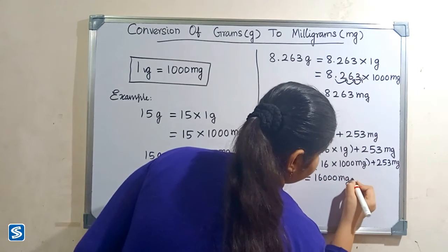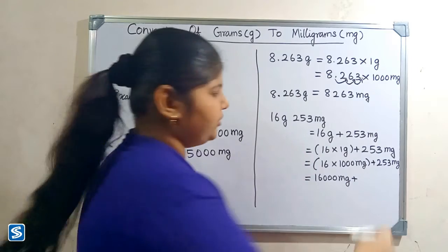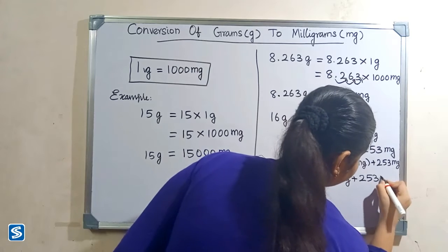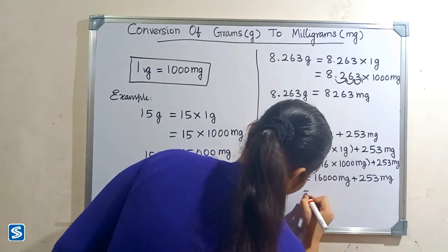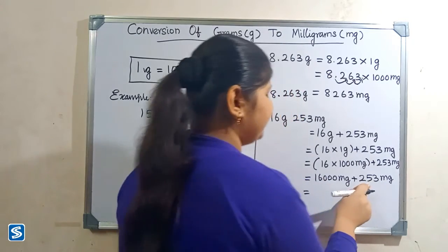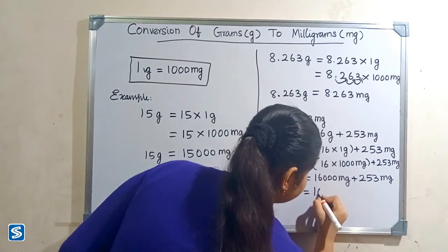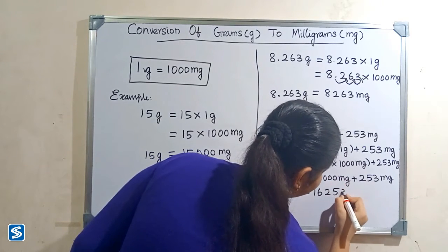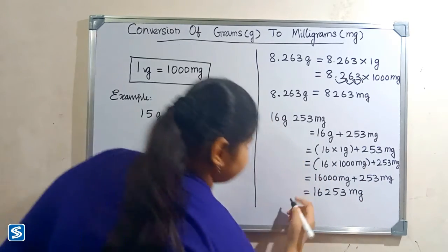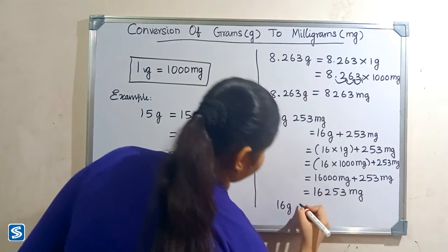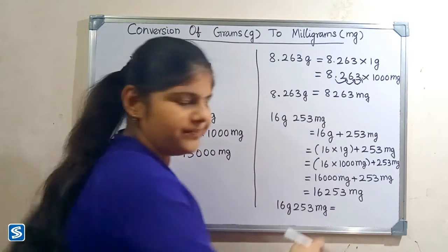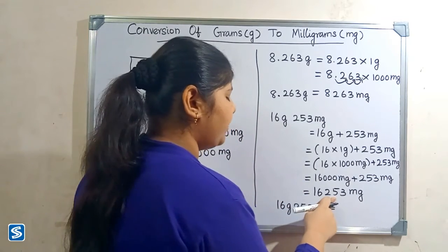16,000 milligrams plus 253 milligrams will be 16,253 milligrams.